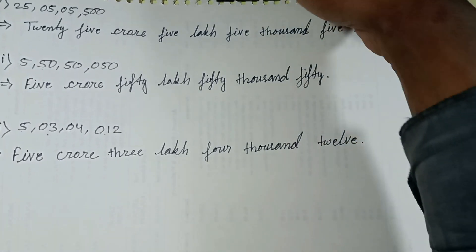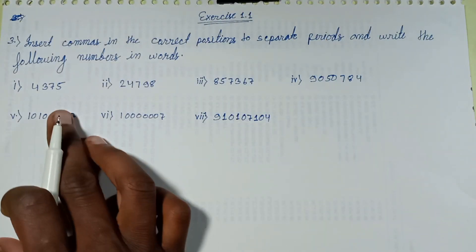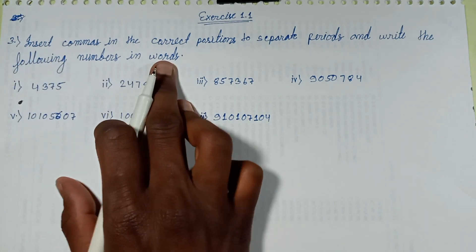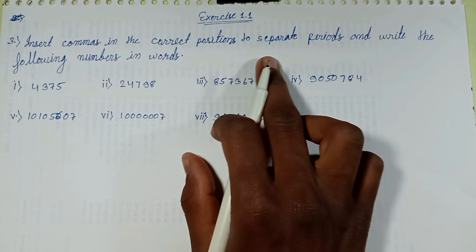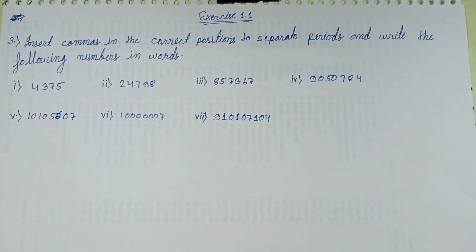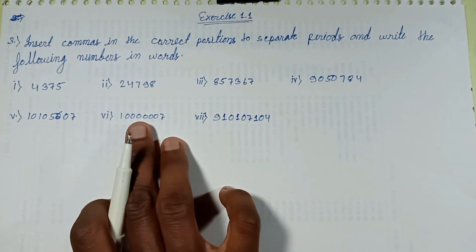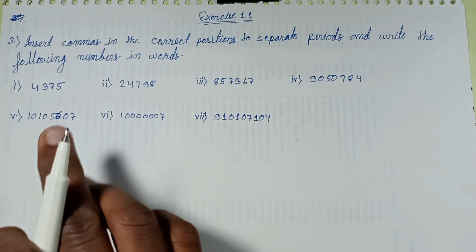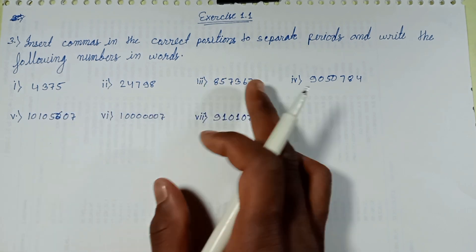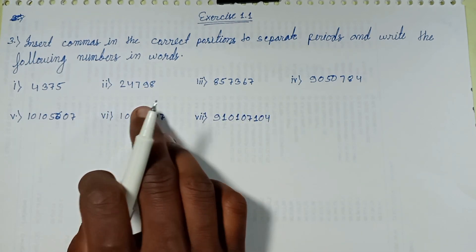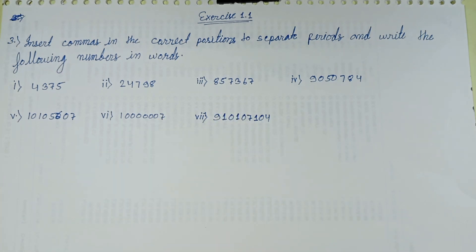In the next upcoming episode, we will solve Exercise 1.1 Question Number 3: insert commas in the correct position to separate periods and write the following numbers in words. First separate by commas, then write the number in words form. Check the description link for help.